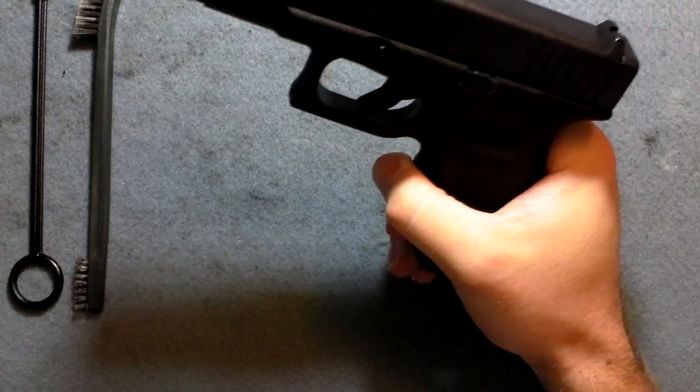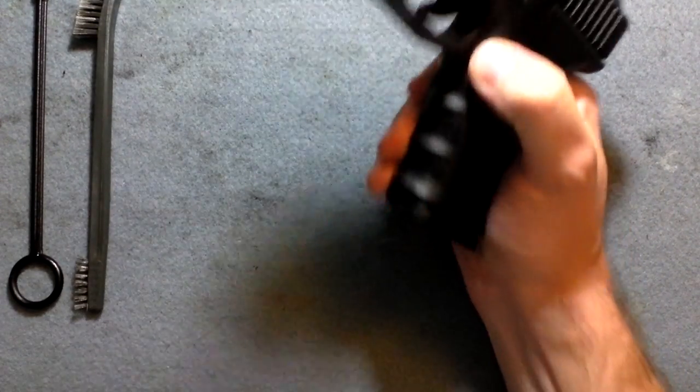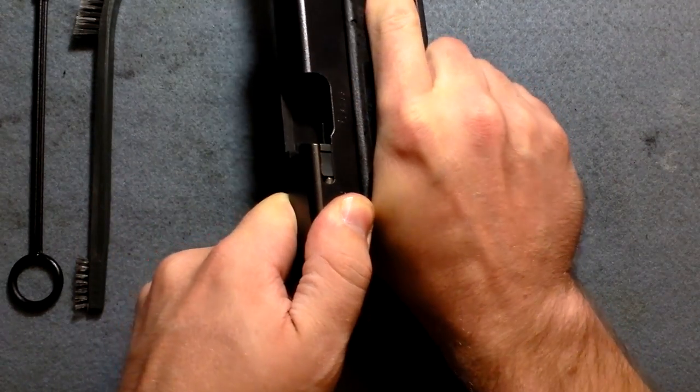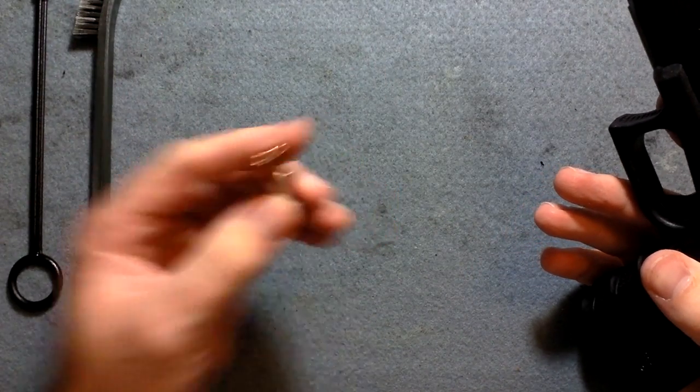First things first, let's talk some gun safety. This gun is loaded. How do we check that it's unloaded? Magazine release. Rack the slide. Safe direction. We're safe now.